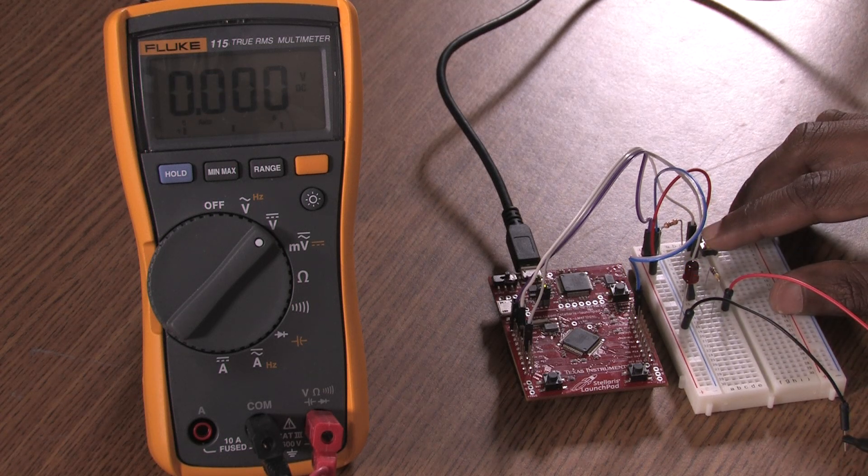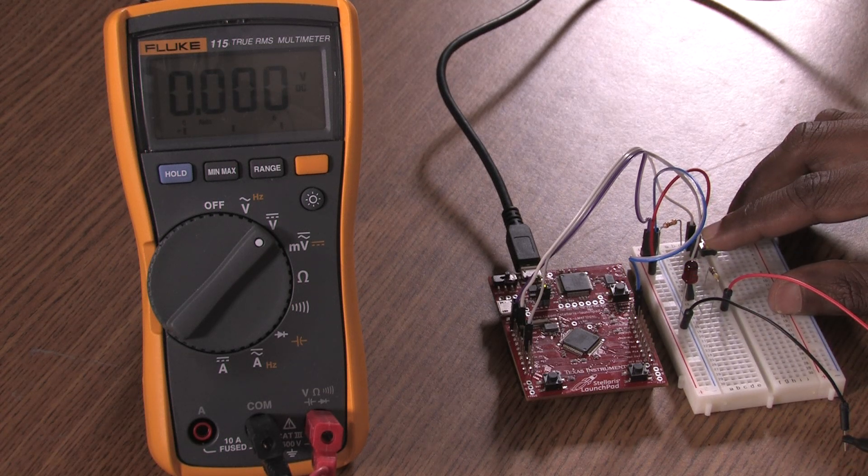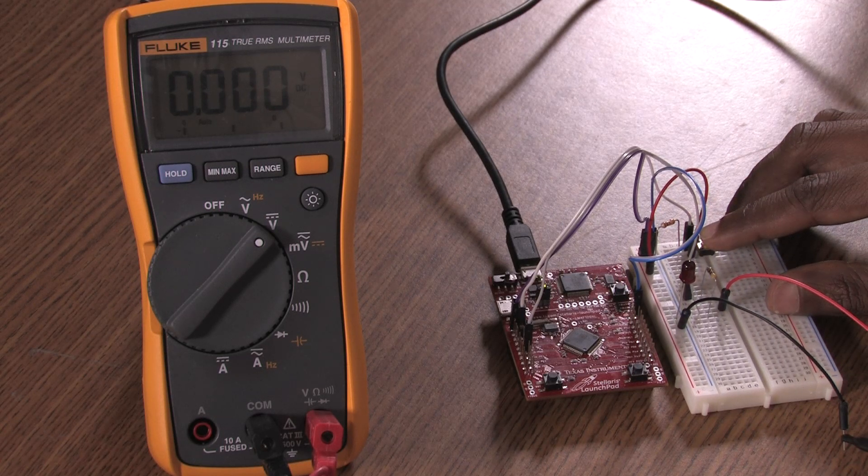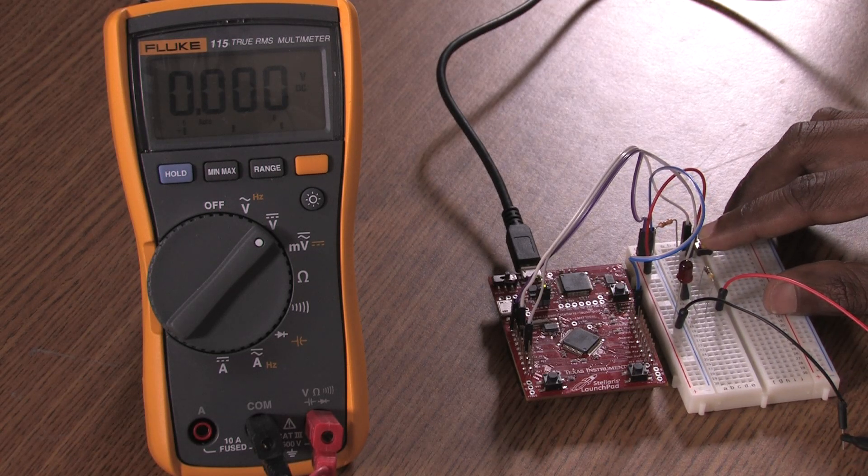We also noticed that turning the LED off by pressing the switch will cause the voltage across the LED to be zero.